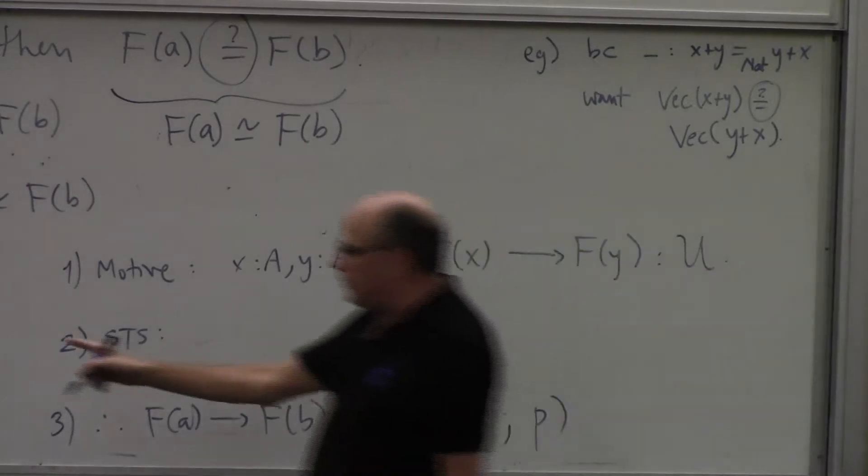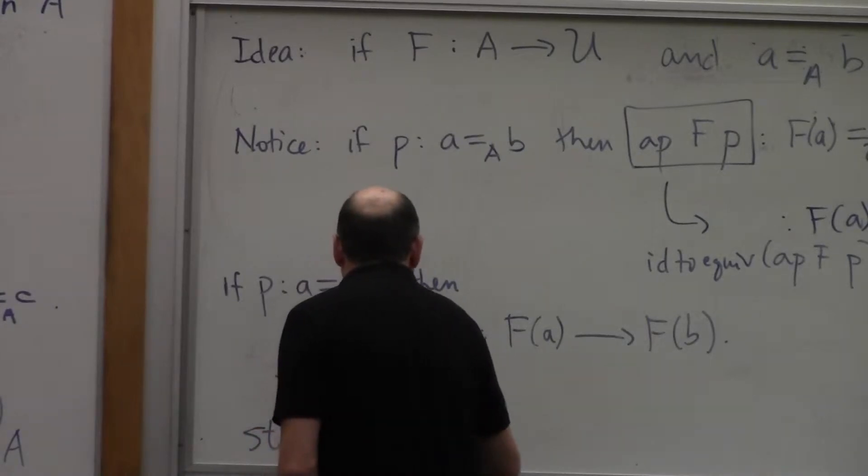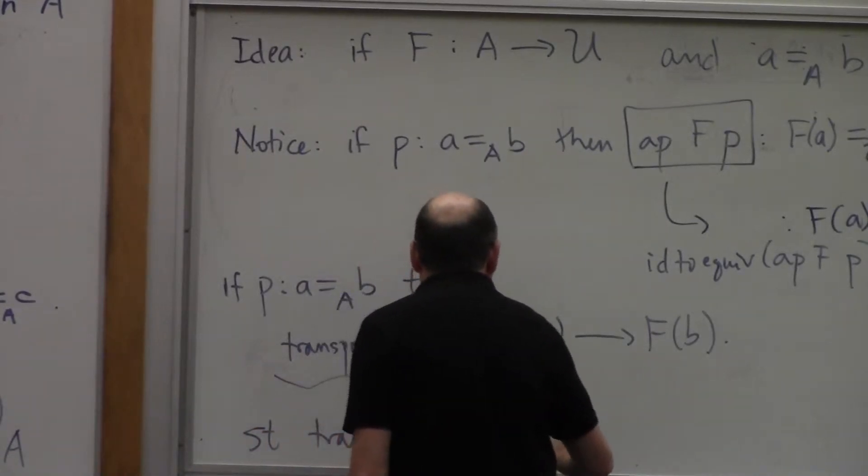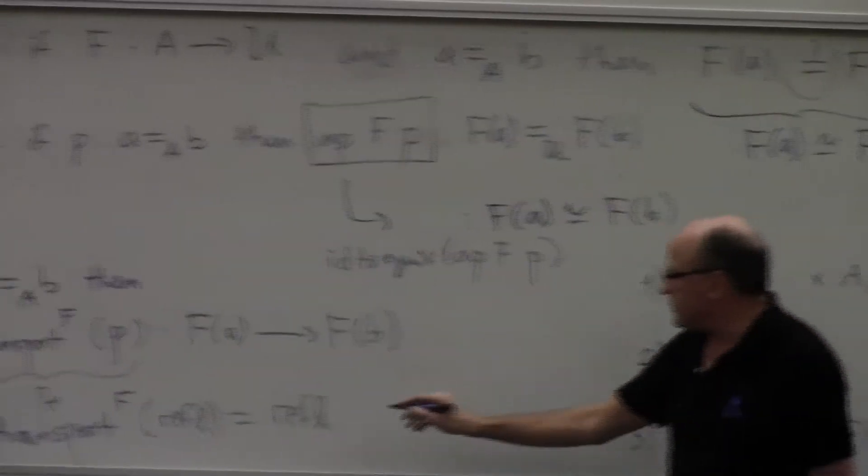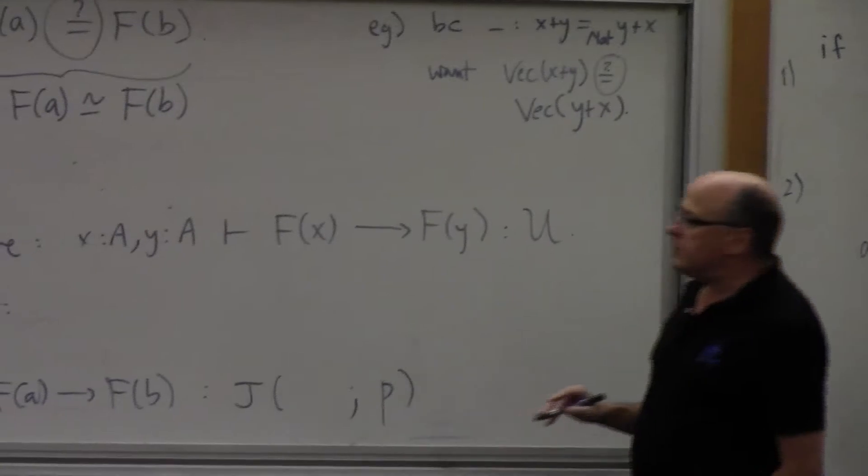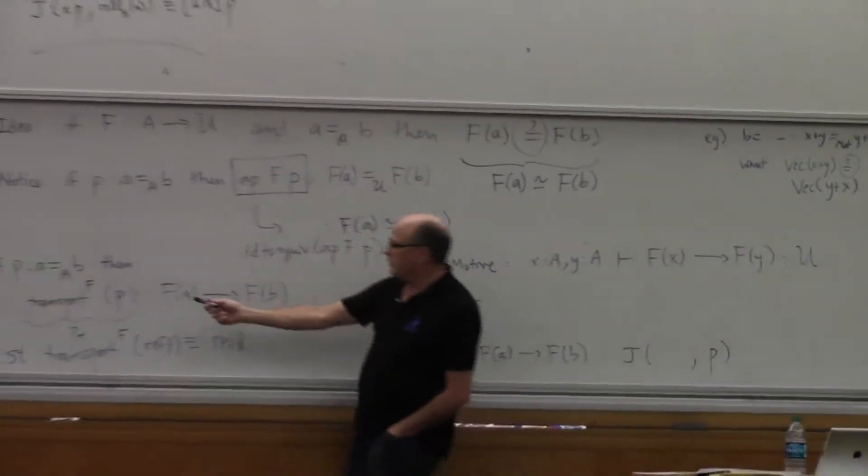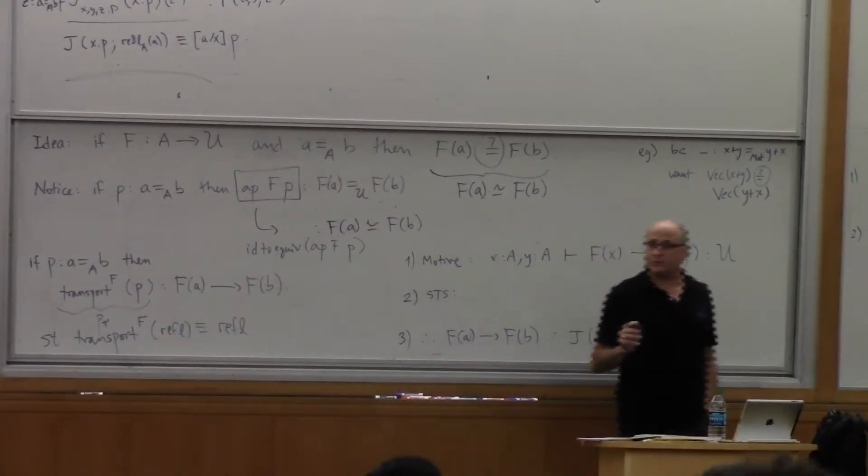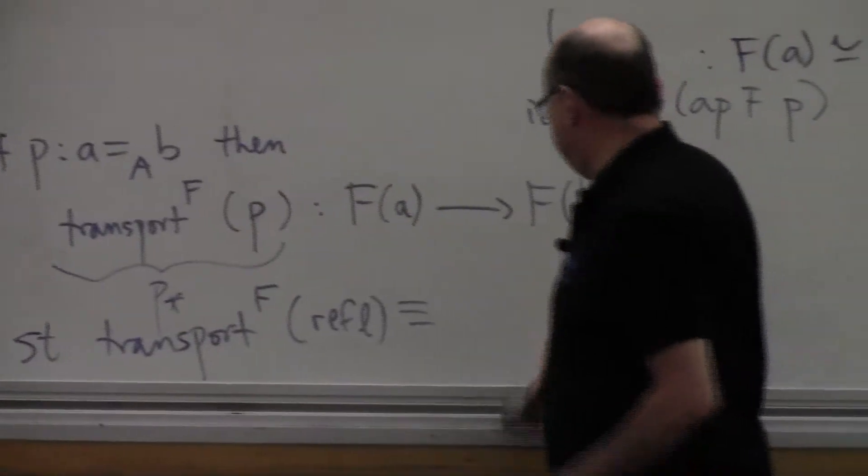So in fact, I will not only know that you have this transport but I will know that transport on f of reflexivity is reflexivity at the appropriate type. And knowing or definitionally this should be definitional is definitionally equal to that. Knowing that will allow me to show that transport is functorial is functorial in p that is respects the path structure composition and inverse. That should be identity. The identity function. Transport of refl is the identity function. Yes.